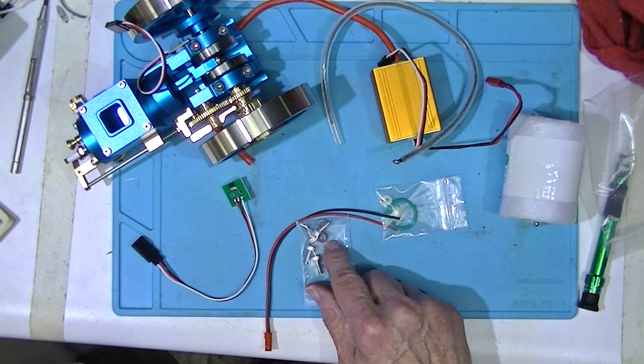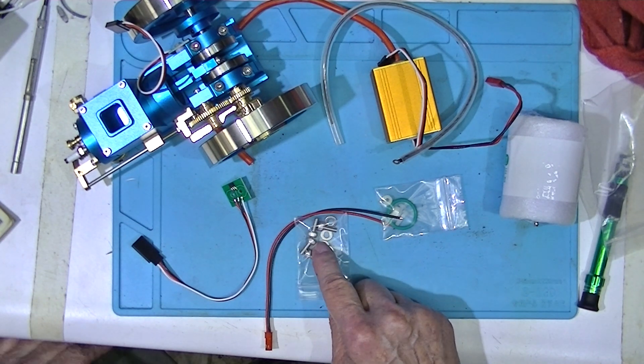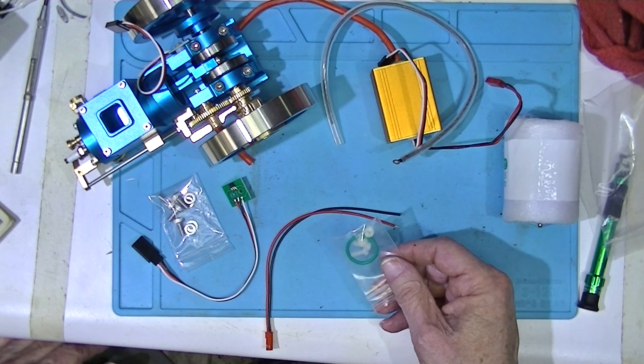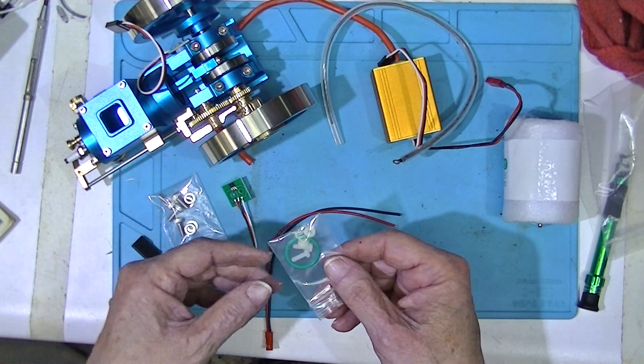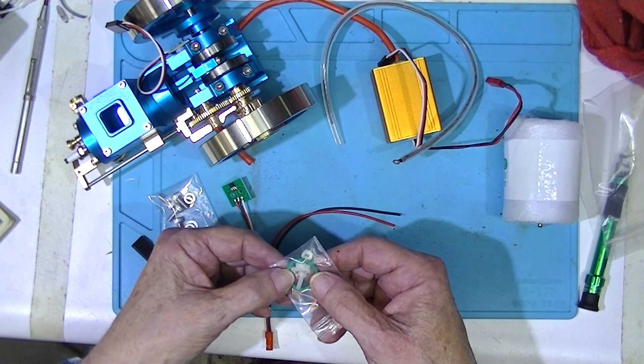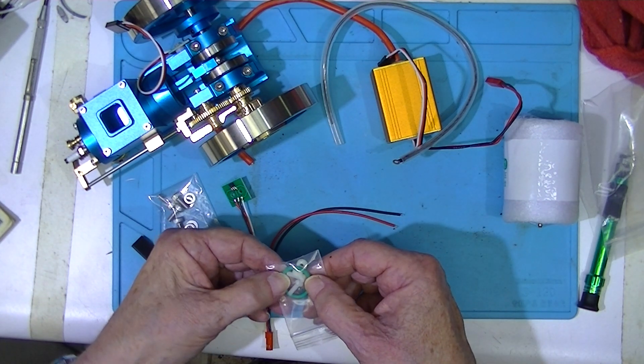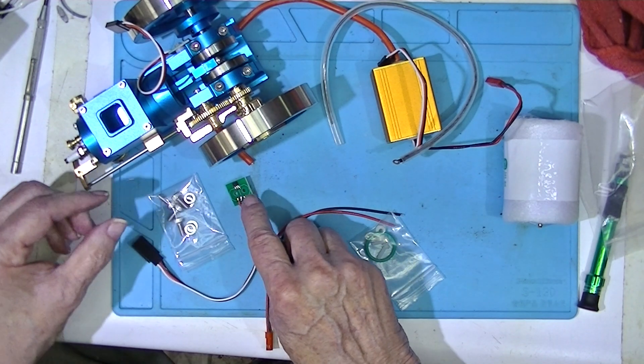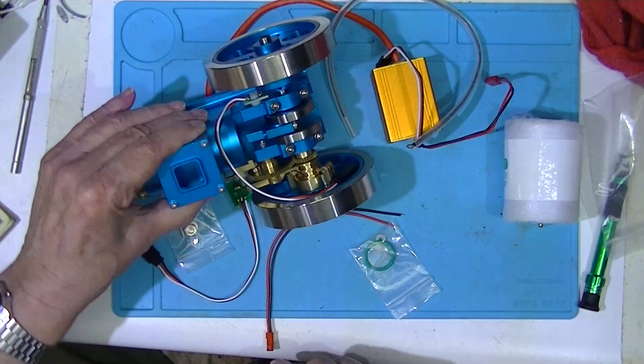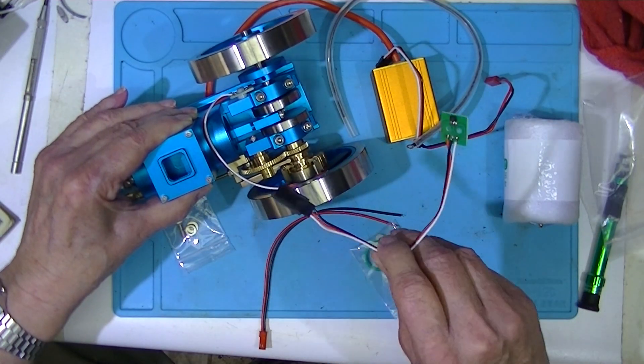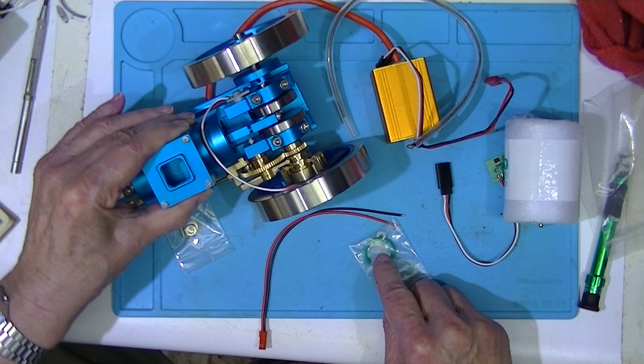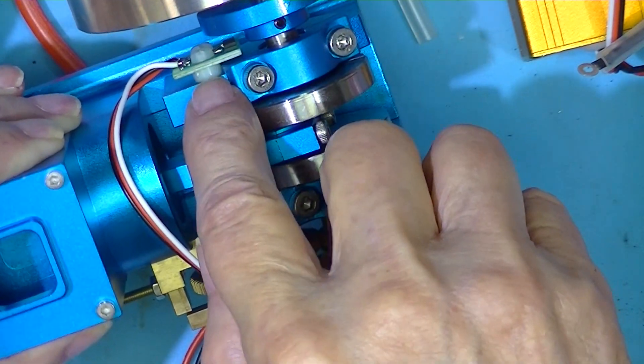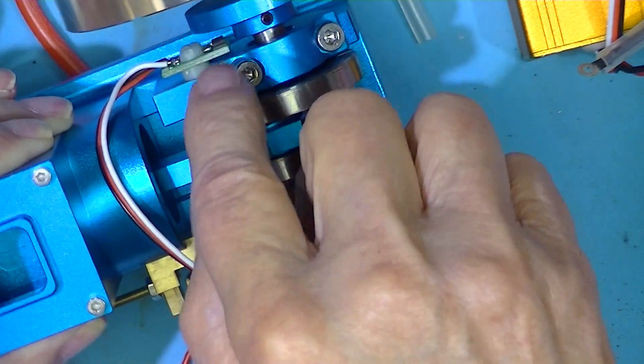These are mounting screws for the bottom of the motor. I'm guessing the white nylon or plastic machine screws and spacers will mount this ignition pickup somewhere. This is a spare Hall effect switch, spare nylon bolts, and a spare board.